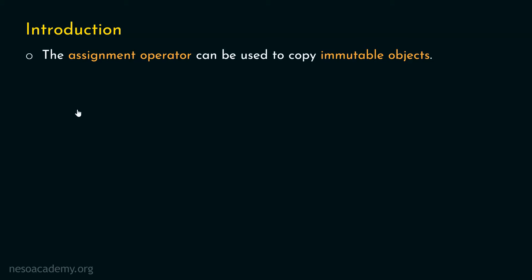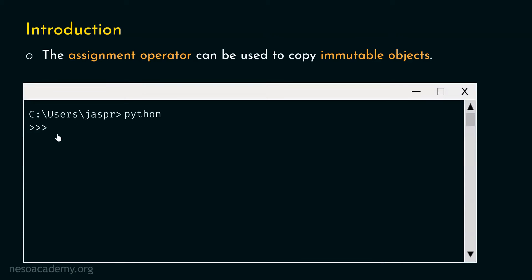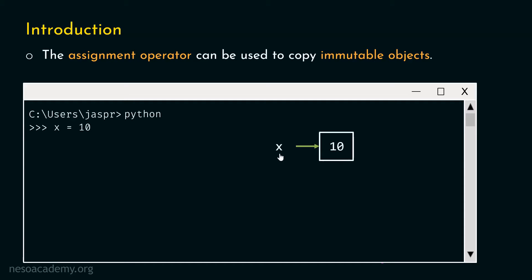We will open our command prompt and activate the Python interactive shell. Now, let's type x equal to 10. With this, we want to create an object with value 10 and have x point to that object. Python will create a new object with value 10, and x will point to that object. This is the visual representation of x pointing to 10.